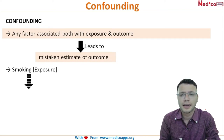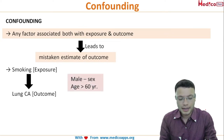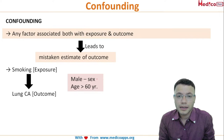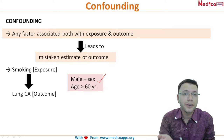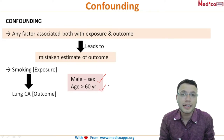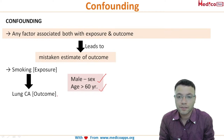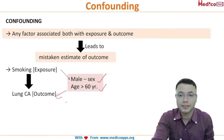For example, smoking is the exposure and lung cancer is the outcome. We also know that lung cancer is more common in the male sex, and as age increases, the incidence of lung cancer increases. So a study with a predominantly 60-plus population — age itself becomes a factor that can lead to cancer. These are called confounding factors.